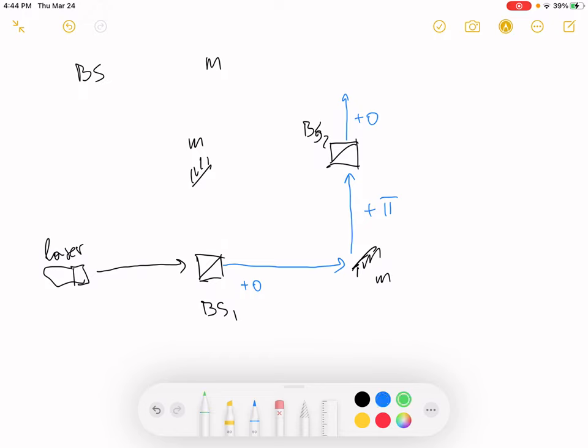Second path is absolutely the same as the first one. Passes through the beam splitter. Still zero phase. Reflects off the mirror. Plus pi. And then it reflects from the second beam splitter. Plus pi over two.